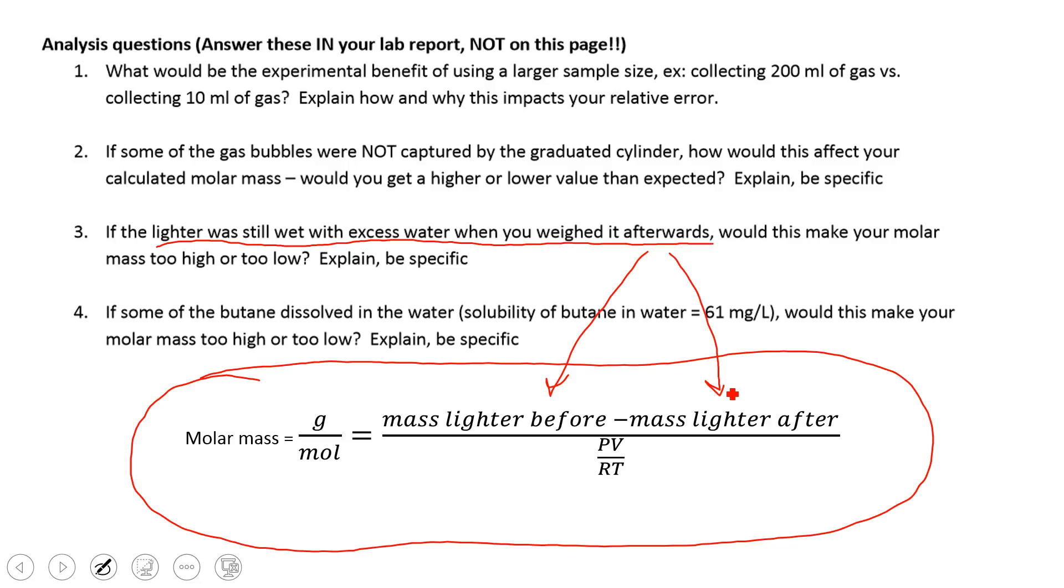So thinking of this scenario, if it makes the mass of my lighter afterwards too high, so if that makes my final volume too large, then that's going to make my mass of my gas too small, right? Because I'm going to be subtracting a larger number, so that will give us a smaller value. And if my mass is smaller, then my calculated molar mass is going to be smaller.